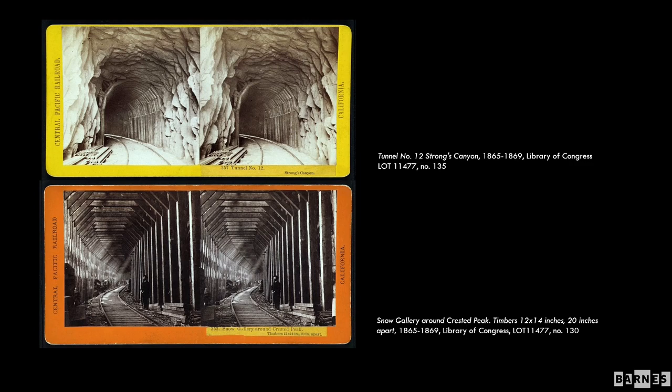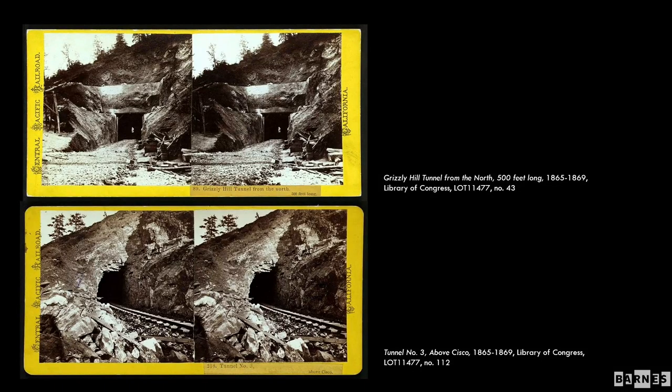The tunnel vision of the stereoscope is at full tilt in pictures like 'Tunnel Number 12, Strong's Canyon,' where repetitious beams enclose the foreground and the vanishing point veers off frame. 'Snow Gallery Around Crested Peak' takes on a cinematic quality as rays of light cascade through open beams. The visual analogy of the tunnel to the stereoscope extends to the eye itself in pictures like 'Grizzly Hill Tunnel' and 'Tunnel Number Three.' As the viewer peers into the stereoscope and the image comes into focus, rocks and boulders closest to the camera begin to swell and crystallize. The spectator's eyes, fixed straight ahead, align with the tunnel's dark aperture that also appears to stare back — pupil to pupil.